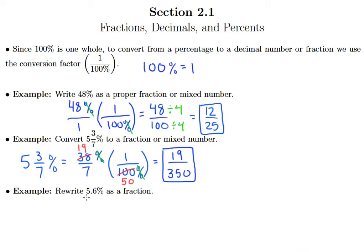Alright, for this last example, we have a percent, 5.6%, that we'd like to convert to a fraction. Again, I will multiply by 1 over 100% as my conversion factor. I see my percent symbols canceling. So that leaves me with 5.6 over 100.